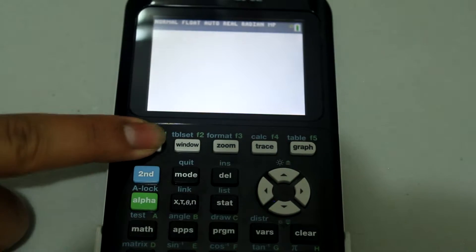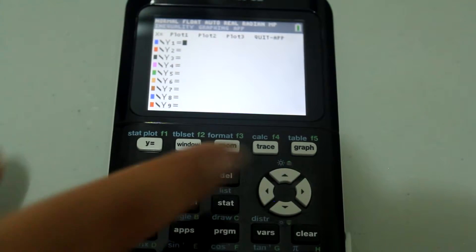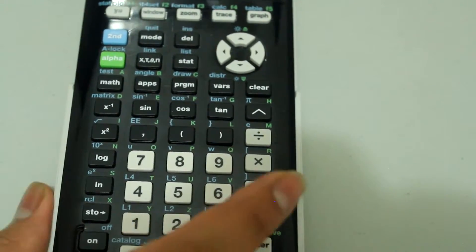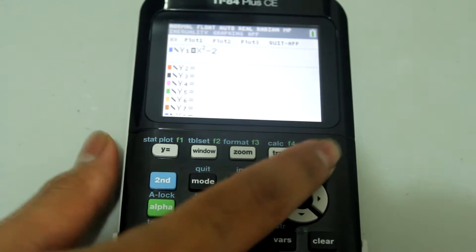First, let's press the y equals button and now let's type in x squared minus 2. And now if you press graph,